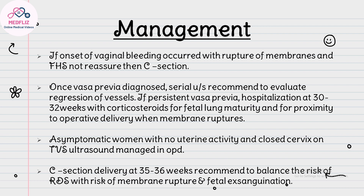Once vasa previa is diagnosed, serial ultrasound is recommended to evaluate regression of vessels. If persistent vasa previa is found, hospitalize at 30 to 32 weeks of gestation for corticosteroid cover and proximity to operative delivery when membranes rupture. Asymptomatic women with no uterine activity and closed cervix on TVS can be managed in OPD. Cesarean section at 35 to 36 weeks of gestation is recommended to balance the risk of RDS against the risk of membrane rupture and fetal compromise.